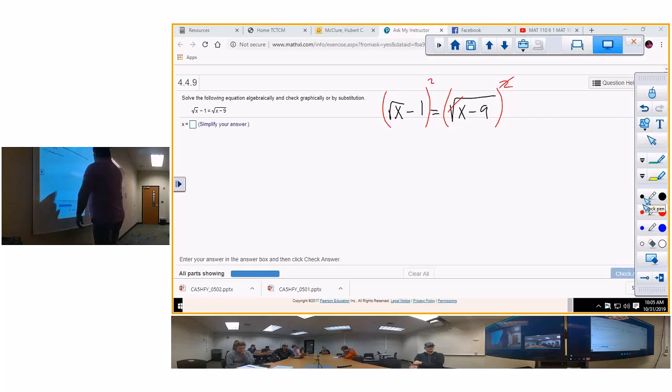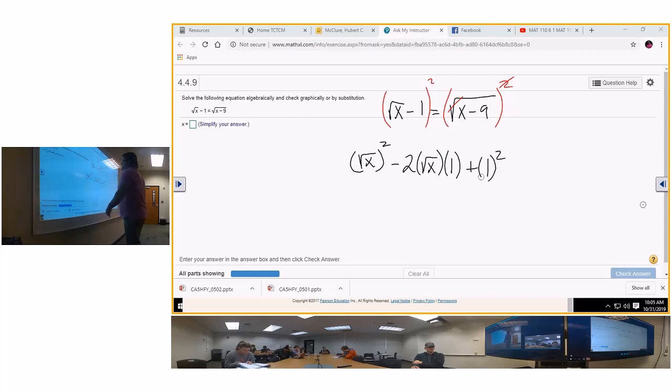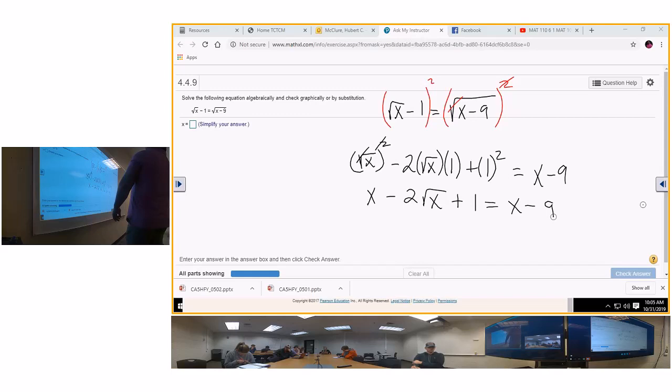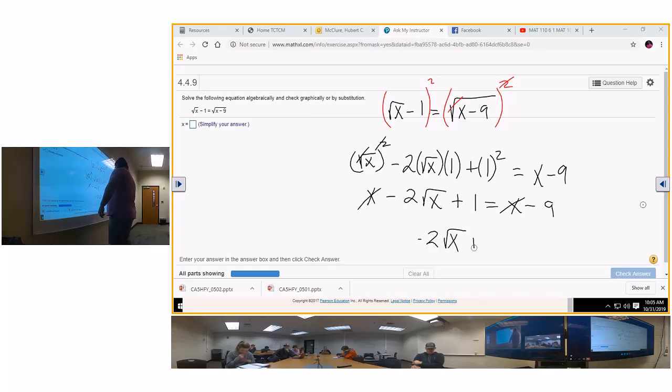So, now you've got square root of x squared minus 2 times the square root of x times 1 plus 1 squared. That's shortcut number 2. That cancels that. That cancels that. You get x minus 2 square root of x plus 1 is equal to x minus 9. What happens when I bring the x over? Cancels that. What happens when I bring the 9 over? You get negative 2 square root of x plus 10 is equal to 0.